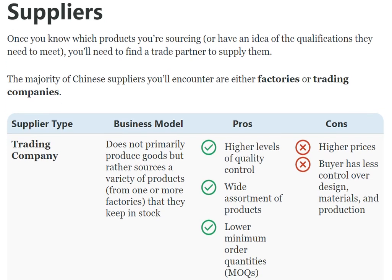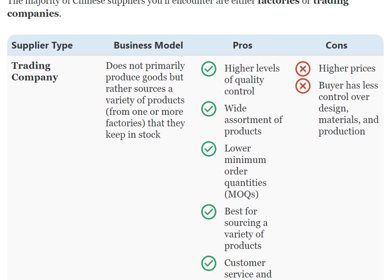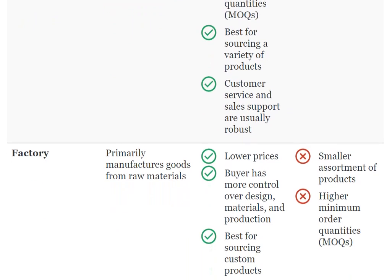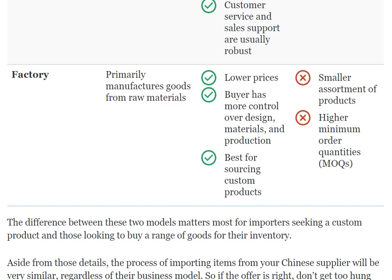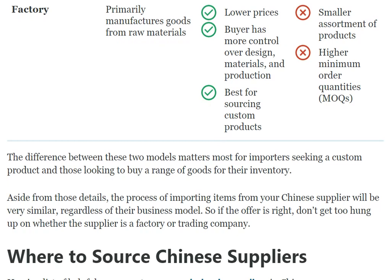The majority of Chinese suppliers you'll encounter are either factories or trading companies. Trading companies do not primarily produce goods but rather offer higher levels of quality control, a wider assortment of products, lower minimum order quantities, and robust customer service and sales support. Factories primarily manufacture goods from raw materials, offer lower prices, and give buyers more control over designs, materials, and products.